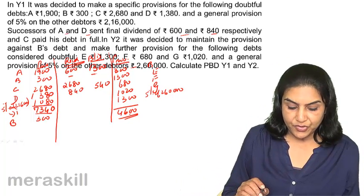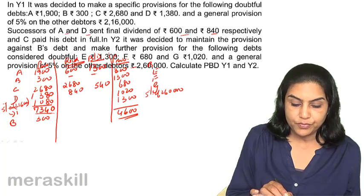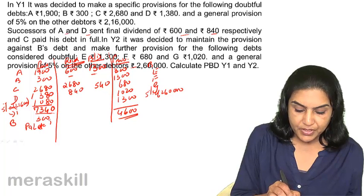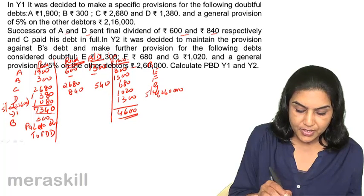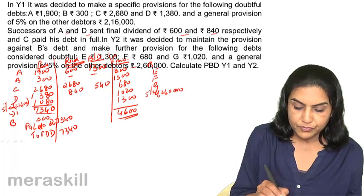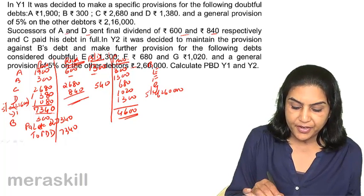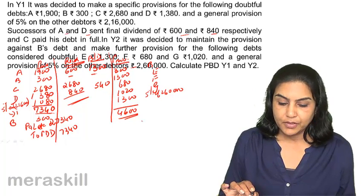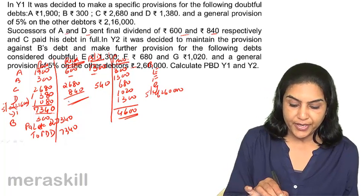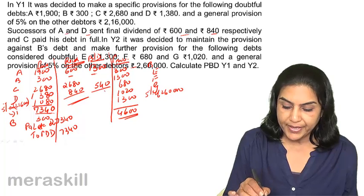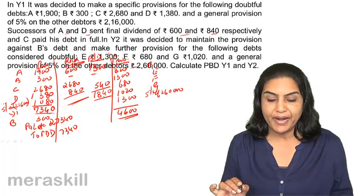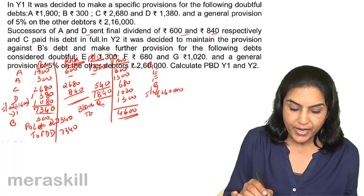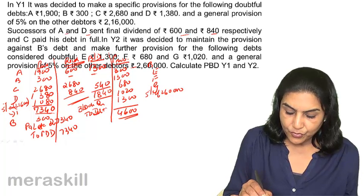For accounting entries: Profit and Loss Account debit to Provision for Doubtful Debts — 7,340 for Year 1. For amounts received, Bank Account is debited to Debtors for A, C, and D. For bad debts, Bad Debts Account debit to Debtors — 1,840.